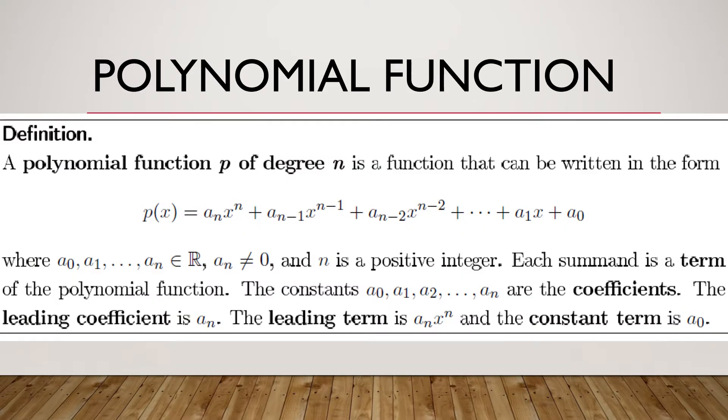Let us have the definition of polynomial function. A polynomial function P of degree n is a function that can be written in the form P(x) = a_n x^n + a_{n-1} x^{n-1} + ... + a_1 x + a_0 which is the constant term. We all know that a_0, a_1 up to a_n are all real numbers but there is a condition that a_n, the numerical coefficient of the leading term, must not be equal to 0.